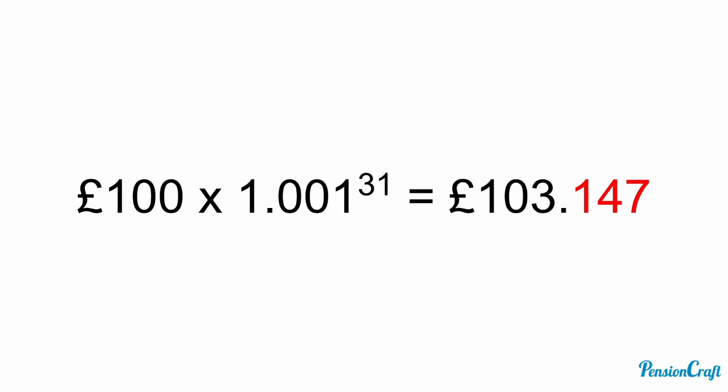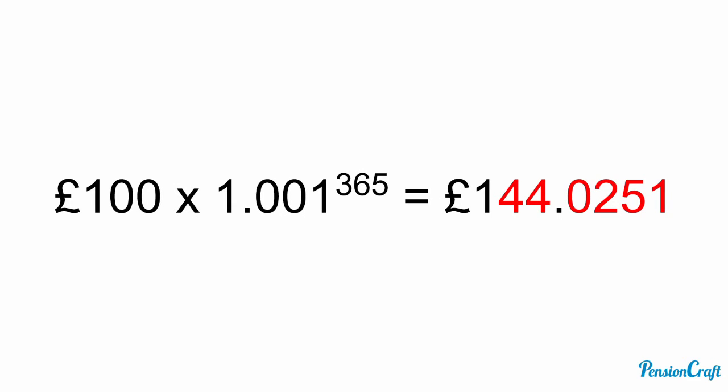After 31 days we're really starting to see the benefit of compound interest. We've got an extra 4.7 pence compared to just simple interest. After a year we end up with £144. If it was simple interest we'd have just received £36.50, and the difference of £7.52 is due to the compounding.